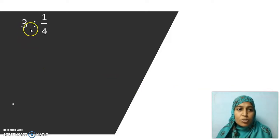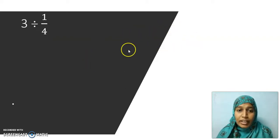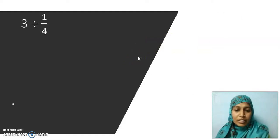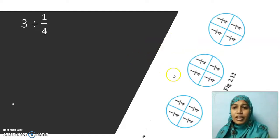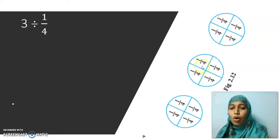When 3 is to be divided by 1 by 4, I have to divide 3 circles into quarters. How many quarters will I have? Now see this picture — it will be very clear for you. This is 1, this is another 1, this is another 1. So totally I have 3 wholes.